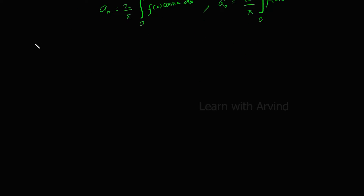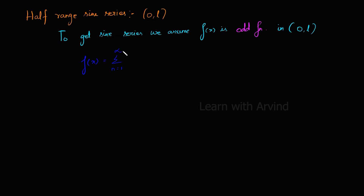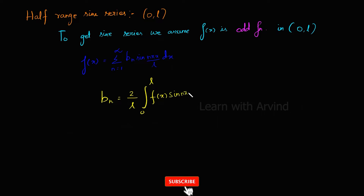Now, half range sine series — given in the interval 0 to L, just like the cosine series. To get the half range sine series, we assume the function f(x) is an odd function. We assume it is an odd function in [0, L]. f(x) equals summation n equals 1 to infinity of bₙ sin(nπx/L). bₙ is given by 2 by L times the integral from 0 to L of f(x) sin(nπx/L) dx.